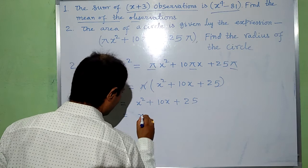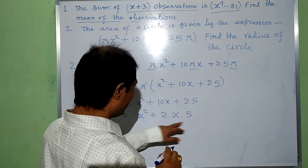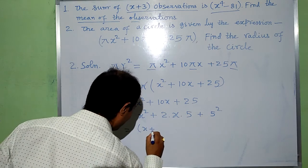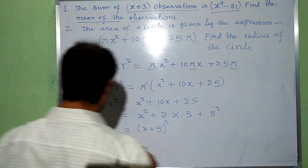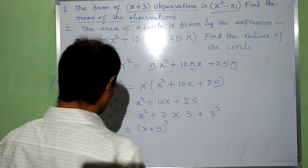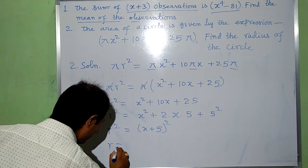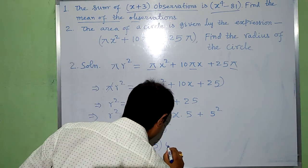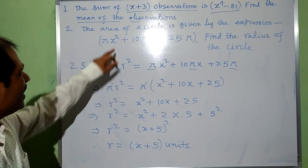We can simplify x squared plus 10x plus 25 using the identity a plus b whole squared equals a squared plus 2ab plus b squared. Here 10x equals 2 times x times 5, and 25 equals 5 squared. So it becomes x plus 5 whole squared, which equals r squared. Taking square root on both sides, r is equal to x plus 5 units. This is the radius of the required circle.